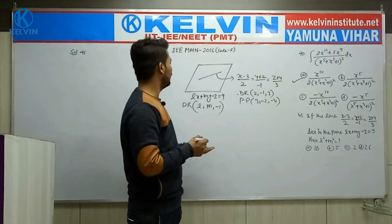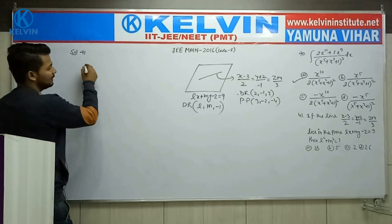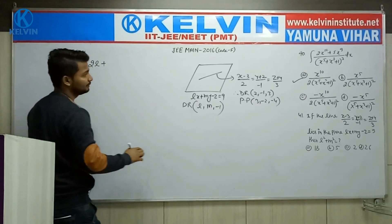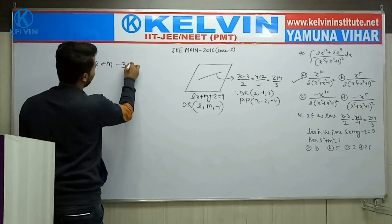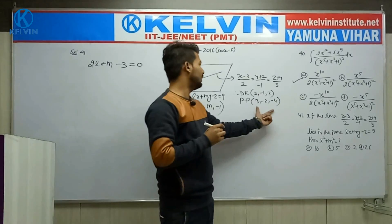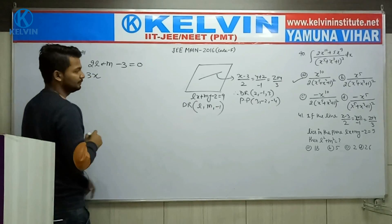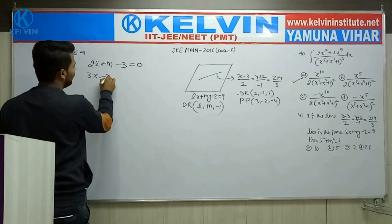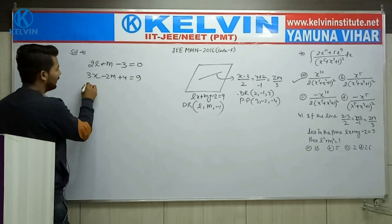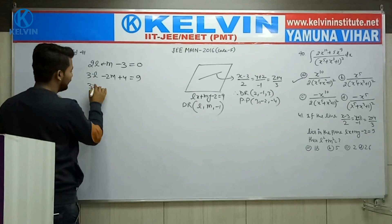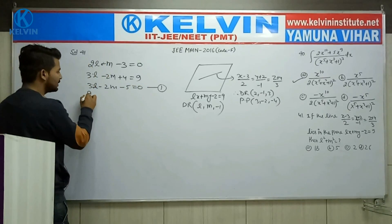The line and this plane are perpendicular to each other, so their direction ratios dot product equals zero. It means direction ratio: 2 into l plus minus 1 into m, that is minus m, and 3 into minus 1, this is minus 3 equal to 0. Also, the passing point lies on the plane: this gives 3l minus 2m plus 4 equal to 9, so 3l minus 2m minus 5 equal to 0. This is equation number 1 and this is equation number 2.